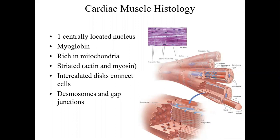Those intercalated discs include desmosomes and gap junctions. Desmosomes are proteins that help adhere cells together. Gap junctions are openings — almost like tunnels — that allow electrical signals to pass very quickly through the heart tissue and heart cells.